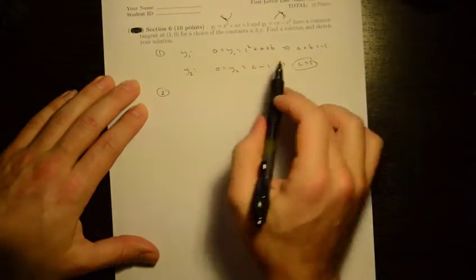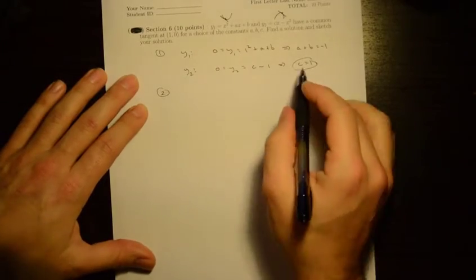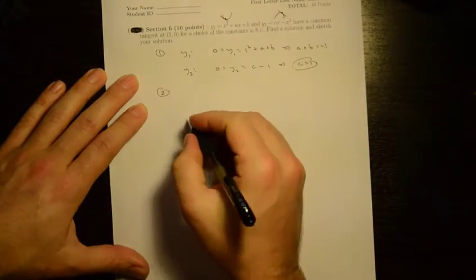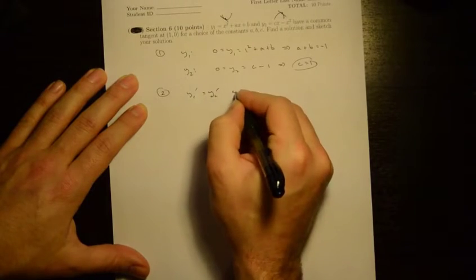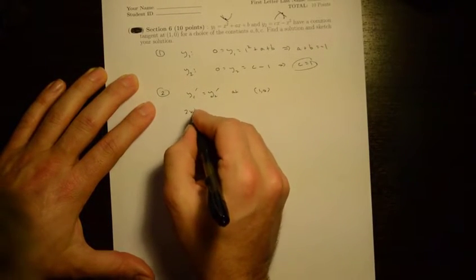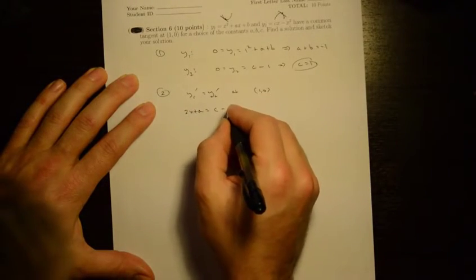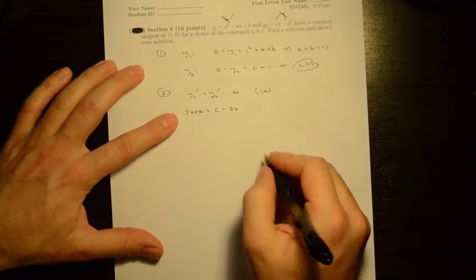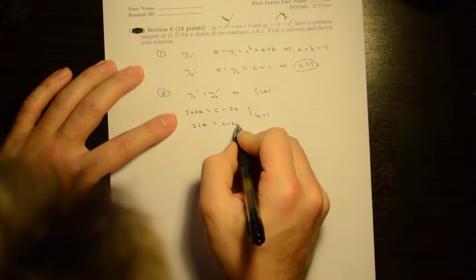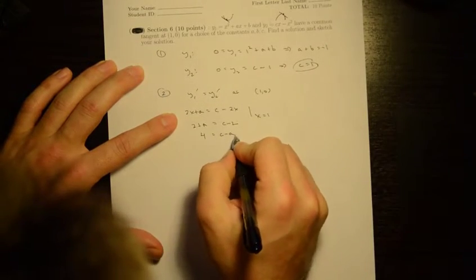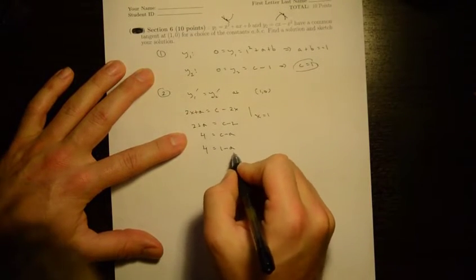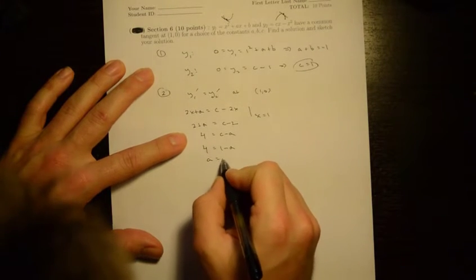We need three equations for three unknowns a, b, and c. The other condition is that y1 and y2 have the same slope at (1, 0), meaning y1 prime equals y2 prime at x equals 1. y1 prime is 2x plus a, and y2 prime is c minus 2x. At x equals 1: 2 plus a equals c minus 2, so 4 equals c minus a. Since c equals 1, we get 4 equals 1 minus a, therefore a equals minus 3.